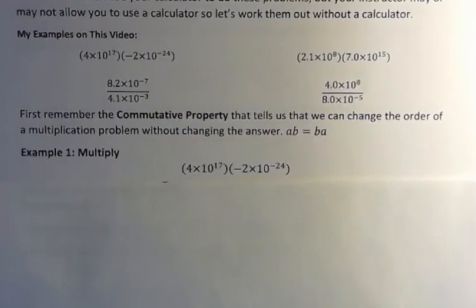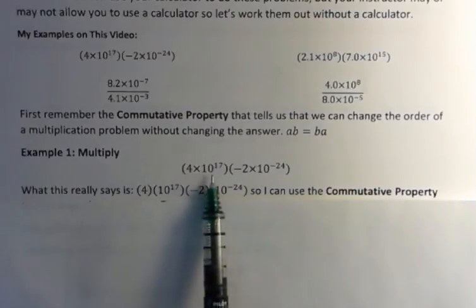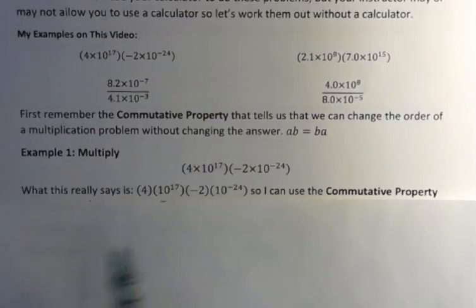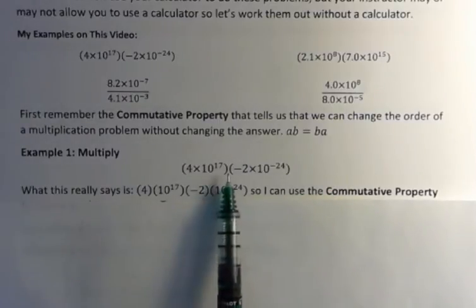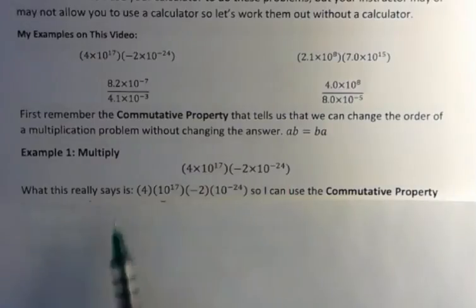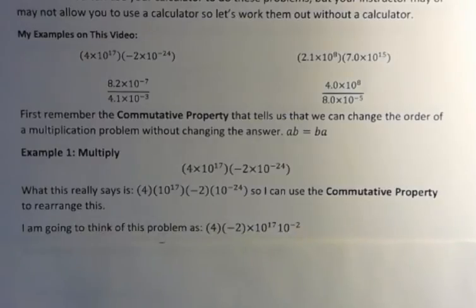So in this problem, (4×10^17)(−2×10^−24), what this really says is 4 times 10 to the 17th times negative 2 times 10 to the negative 24th. It's just one long string of multiplication. When in between the parentheses symbols we assume multiplication, and the x here means multiply, so we can use that commutative property and rearrange it.